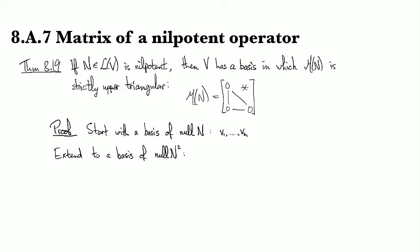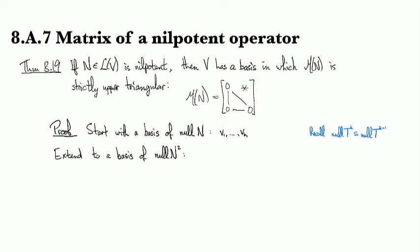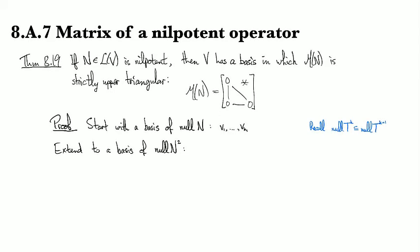So that's going to be our first sort of chunk of basis vectors. And then we're going to extend this to a basis of the null space of N squared. And so remember that we saw that the null space of T to the K is contained in the null space of T to the K plus 1. So I'm just extending up to the next subspace, right?